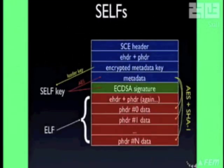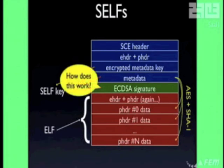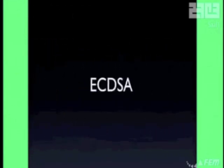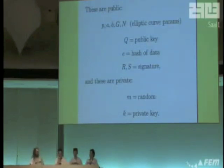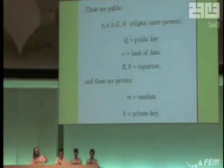We now understand how just about everything works here except for the signature part. So how does the signature thing work? This is ECDSA, and it involves some crazy math. There are a lot of parameters that are public: p, a, b, g, n, q, e, r, and so on.